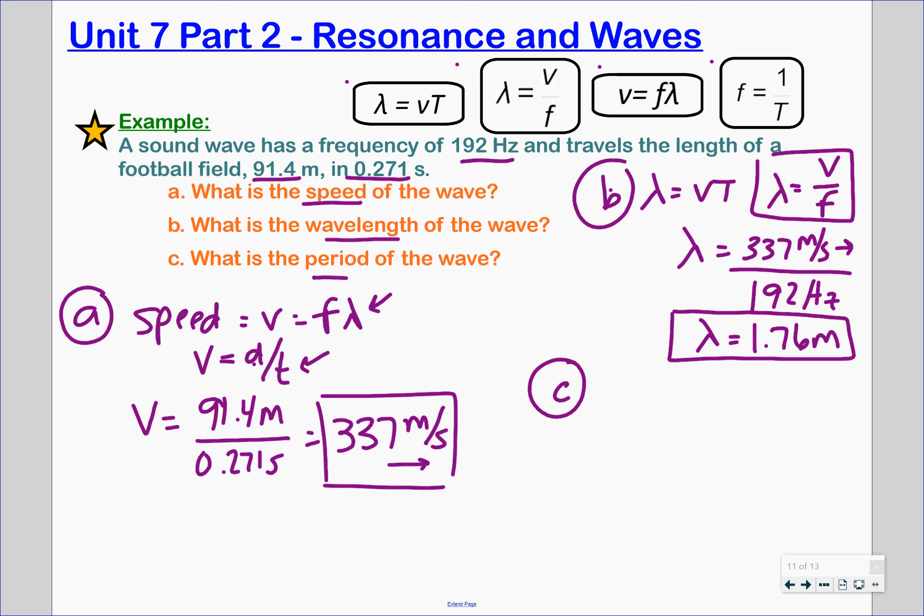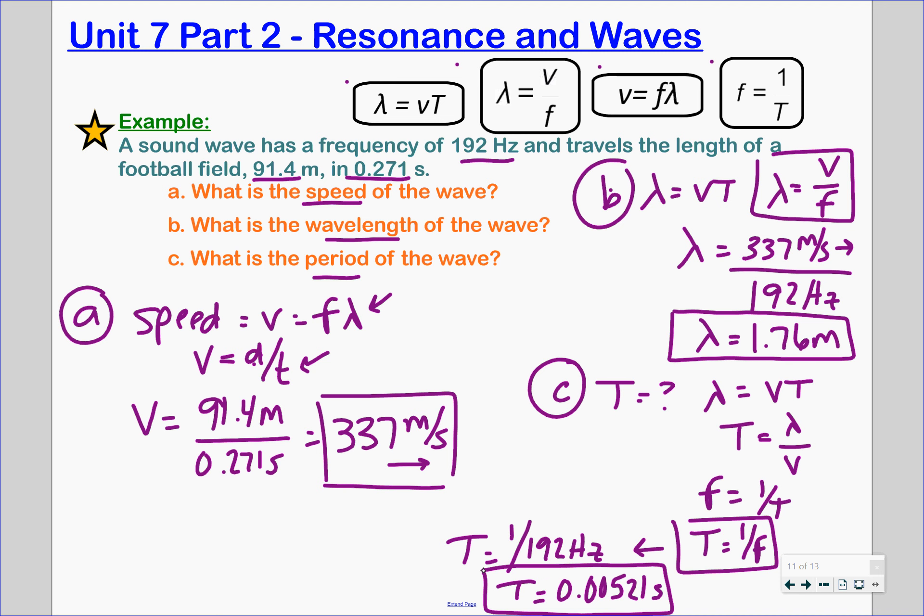All right and then part c says what is the period of the wave? Well we know period is equal to t. So we have one formula up there so we can either manipulate this guy, lambda is equal to velocity times time and we can solve for t. We could say that the period is equal to lambda over the velocity, or we know that frequency is equal to 1 over the period and we can manipulate this to say that period is equal to 1 over the frequency. Any option is fine. I'm going to go ahead and use this guy and I'm going to say that the period of our wave is equal to 1 over our frequency of 192 hertz. So the period of our wave is equal to 0.00521 seconds. Pay attention to your three significant digits there and that would be the period of this wave.